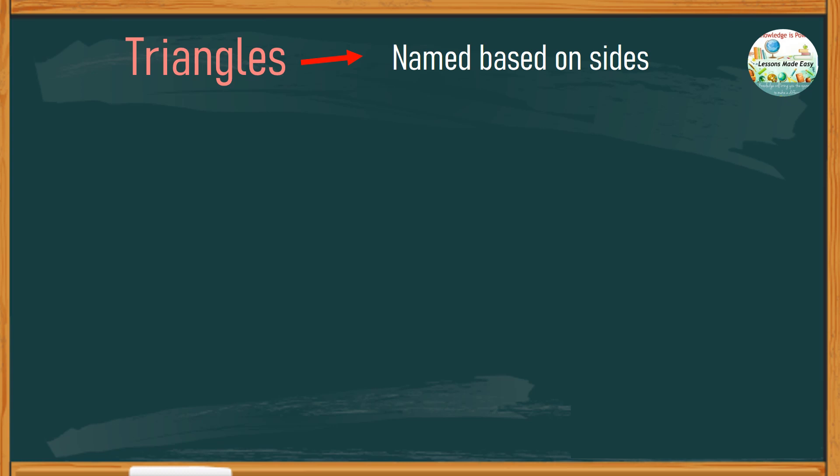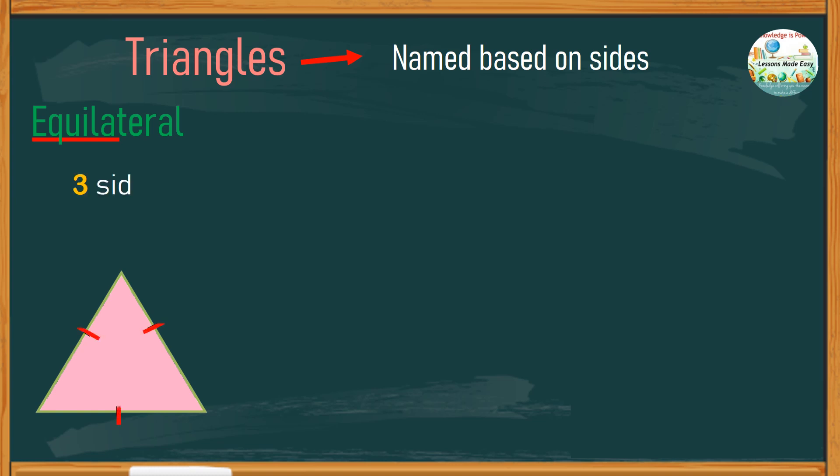First up, we have the equilateral triangle. The term equi is a combining word that comes from Latin, and it has the same meaning as the word equal. Therefore, an equilateral triangle refers to a triangle that has three sides of equal length. Clearly, when the sides are equal, the angles are also equal. And since the sum of the interior angles of a triangle is 180 degrees, this means each of the angles has a measurement of 60 degrees.